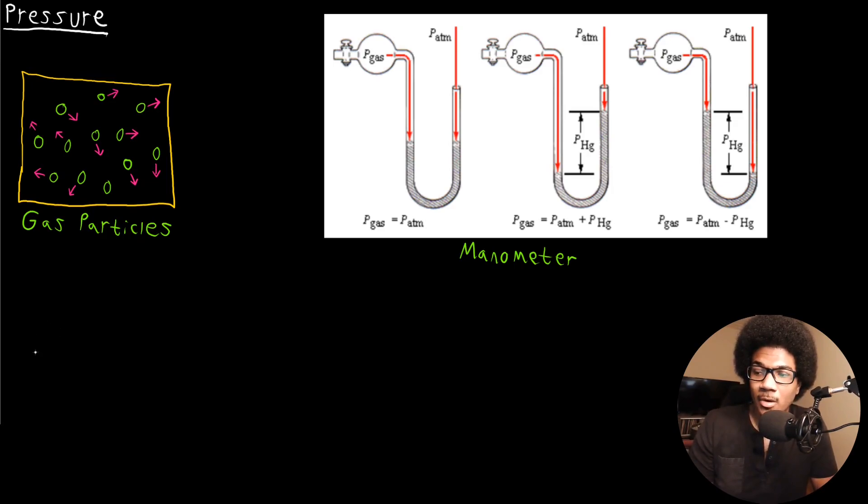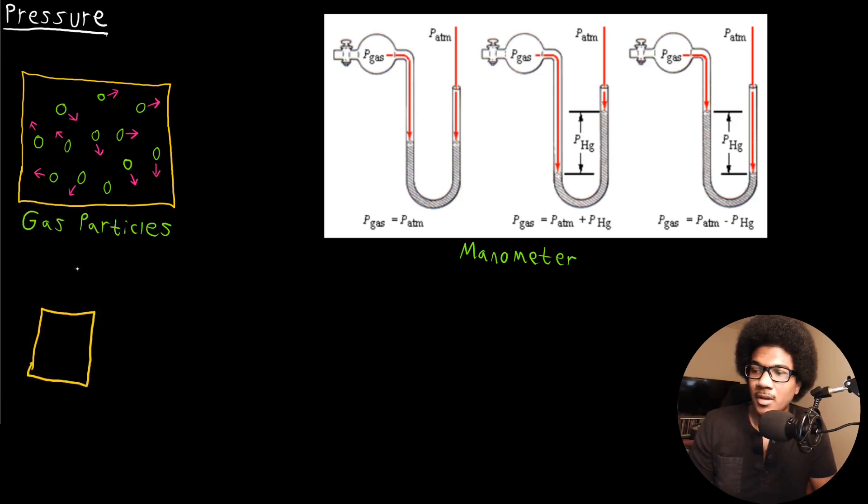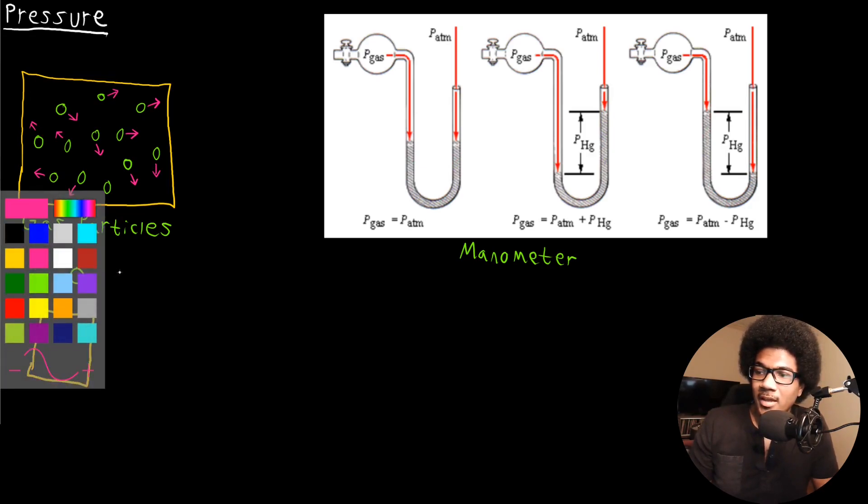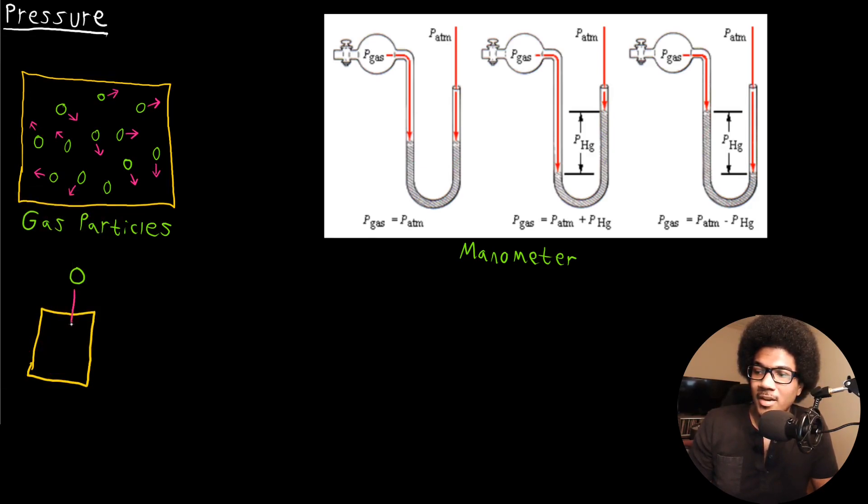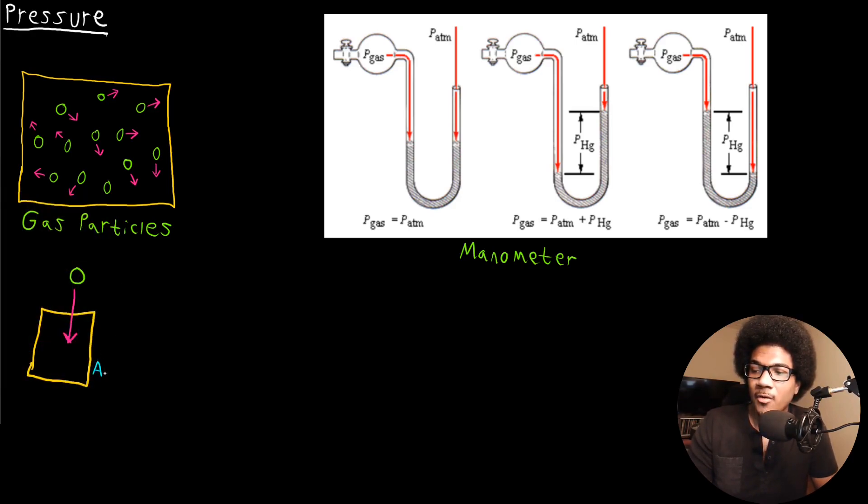So let's kind of zoom in on one of these interactions. So let's say we have our container wall here. And let's say we have one of these gas particles coming in from above here. It's going in this direction, and it's going to strike that container wall. So we know that the container wall has some sort of area, and I'm going to use the capital A to define the area.